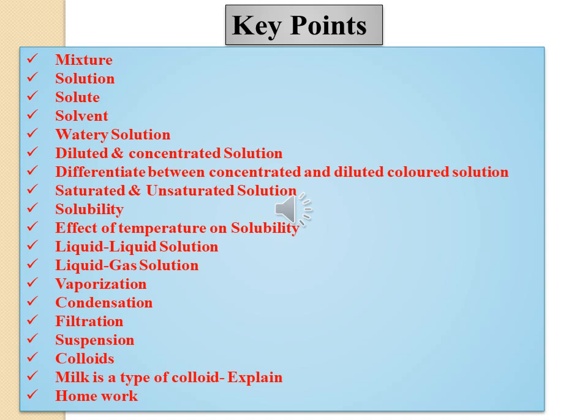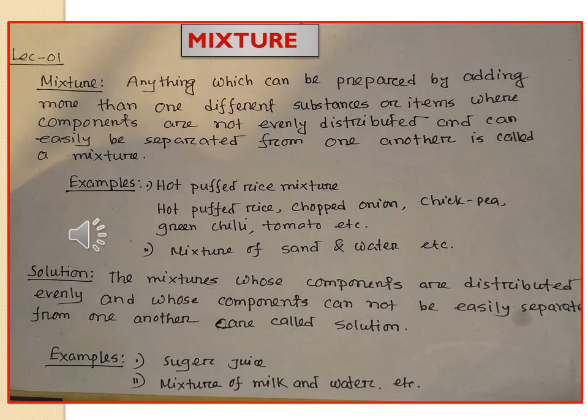At the very beginning of the class I would like to say something about mixture. What is a mixture? Anything which can be prepared by adding more than one different substance or item, where components are not evenly distributed and can easily be separated from one another, is called a mixture. You have to notice two points: whether all the components are not evenly distributed, and whether all the components can easily be separated from one another.